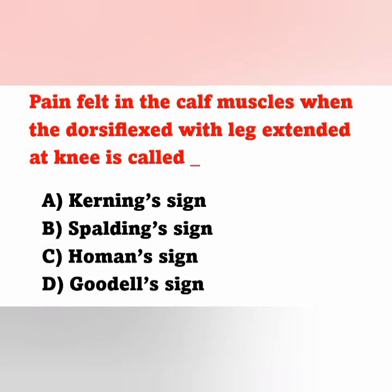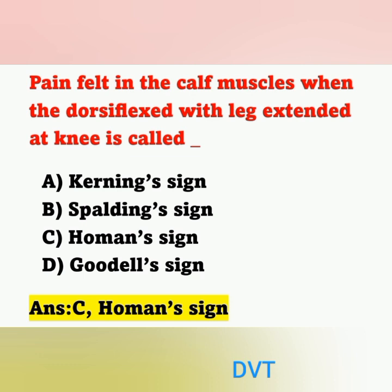Next question: Pain felt in the calf muscles when dorsiflexed with leg extended at knee is called? Options: option A Kernig's sign, option B Brudzinski sign, option C Homan's sign, option D Gold sign. The correct answer is Homan's sign. Homan's sign is one of the positive signs of deep vein thrombosis (DVT). The patient feels discomfort behind the knee and pain in the calf muscles when the foot is dorsiflexed with the leg extended.